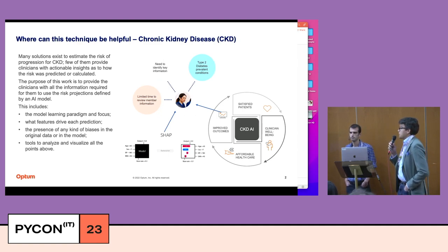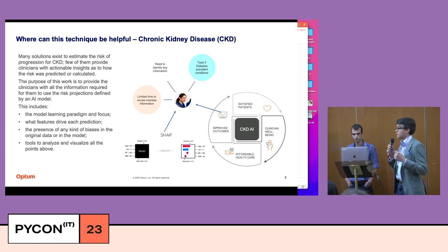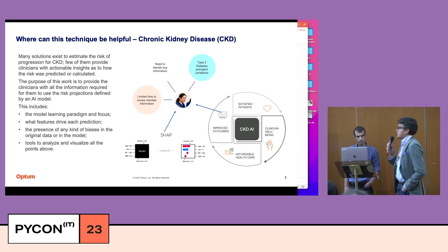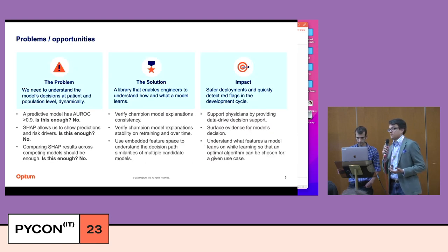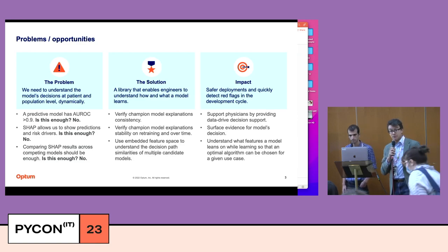The project we're going to talk about is to estimate the likelihood of patients with a chronic condition — specifically chronic kidney disease — and which of these patients have a high likelihood of progressing from a stage that's more manageable to a stage that's more severe, so that clinicians can take actions to prevent that. Being in the clinical domain, just providing a prediction is not enough. We need to provide reasons, evidence, and show that our predictions are deeply rooted in facts.